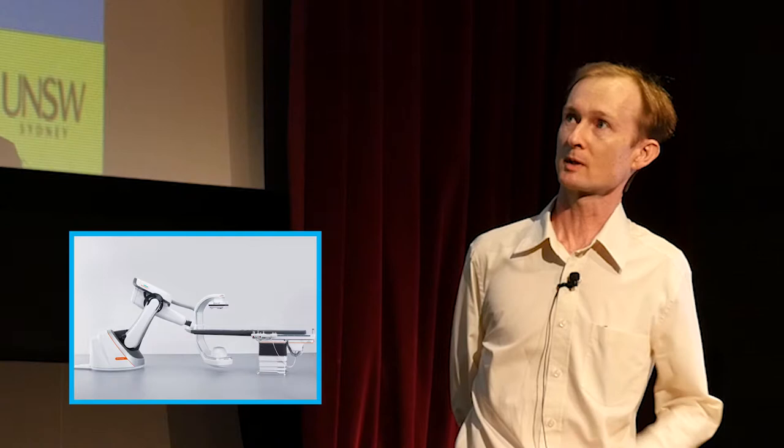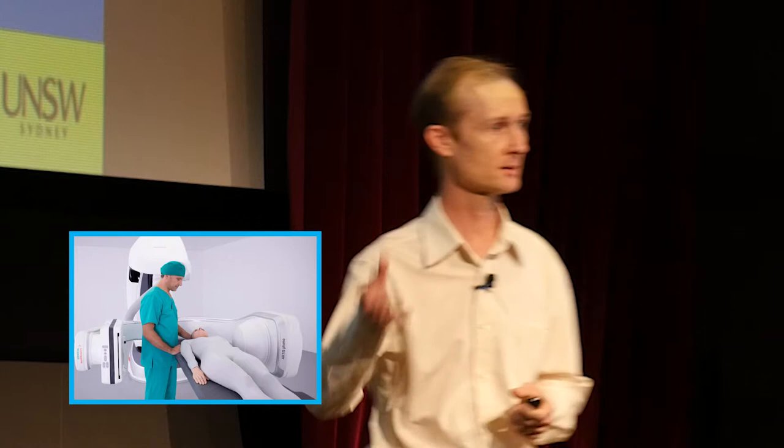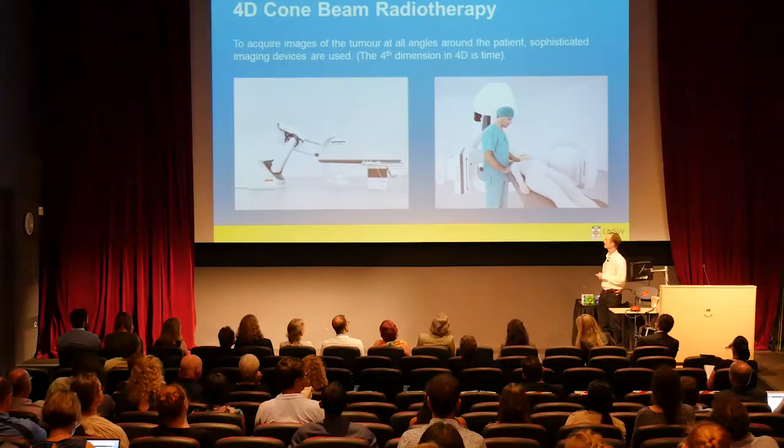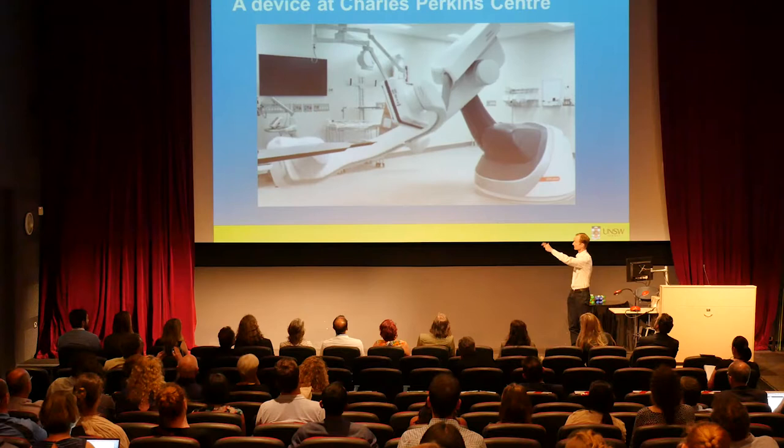The machine we use for this — one of the newer ones — has a plinth where the patient lies. The x-rays are emitted from the source, pass through the patient, and travel to the detector. This detector spins around the patient taking x-rays at different angles. Here's one at the Charles Perkins Center, and the main degree of freedom I want to talk about is this rotation around the patient.